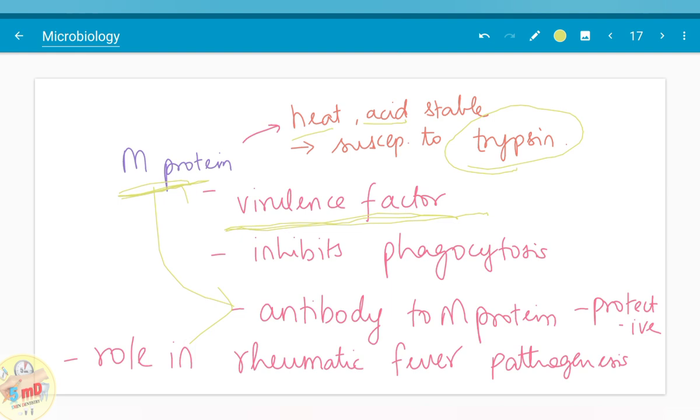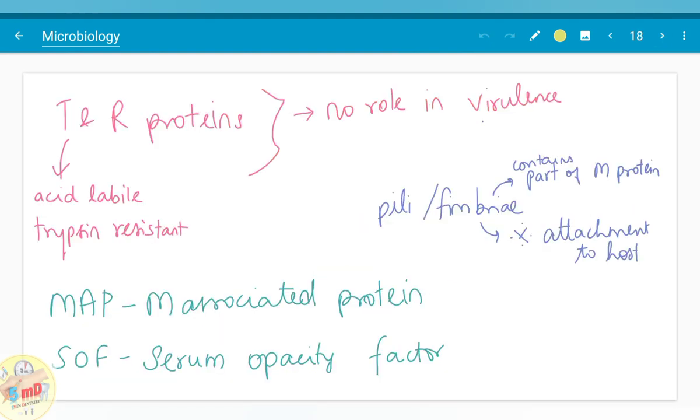Now where it plays an important role. The antibody to M protein is protective but it plays a role in rheumatic fever pathogenesis. Acute rheumatic fever is a non-suppurative complication of streptococcus which occurs up to four weeks after the initial streptococcus infection. Streptococcus is not directly the cause of acute rheumatic fever but this M protein has a role. M protein is known to inhibit phagocytosis and has a role in rheumatic fever pathogenesis.